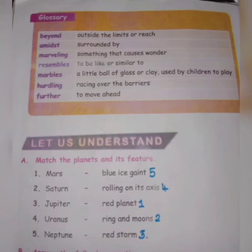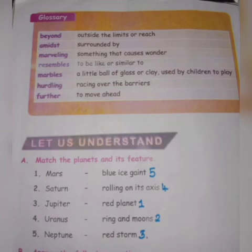Now come to match the following — match the planets and their features. Mars — red planet. Saturn — rings and moons. Jupiter — red storm. Uranus — rolling on its axis. Neptune — blue. If you see page number 86, miss has already marked the match-the-following answers for you all, so it is very easy for you to revise.